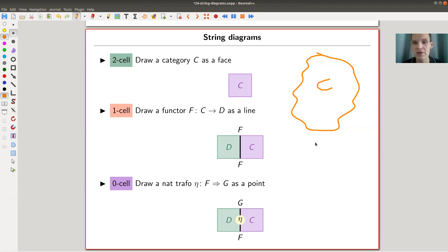A functor is, so this is a two-dimensional thing, a two-dimensional object. The functor will be a one-dimensional object. The natural transformation will be a zero-dimensional object. What is a one-dimensional object? It's a line.